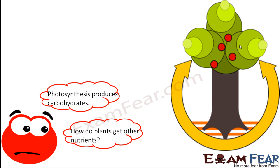So now a very interesting question: photosynthesis produces carbohydrates. That's what we saw - the only product obtained from photosynthesis is glucose, which is a carbohydrate. The glucose gets converted into starch and is stored inside the plant. Starch is also a carbohydrate.